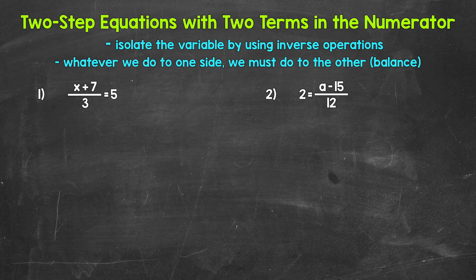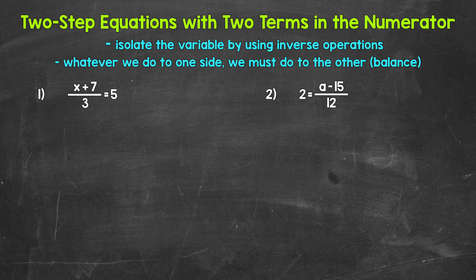On one side of the equation, everything is set up in fractional form, so we have a numerator and a denominator. When we solve equations, we want to isolate the variable — get it by itself — using inverse operations to undo the operations on the side with the variable. And whatever we do to one side of the equation, we must do to the other in order to keep everything balanced and equivalent.